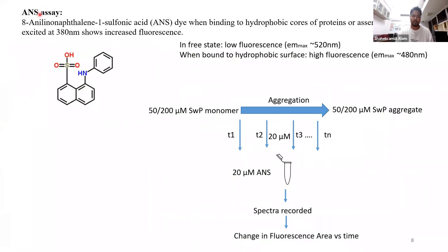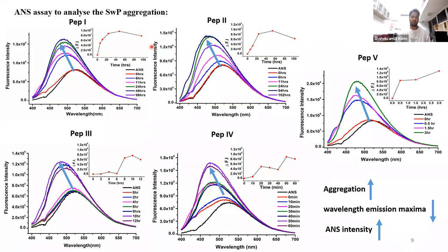We also did the ANS assay. ANS is a fluorescent probe which in free state gives no appreciable fluorescence with emission maximum around 520 nm. But when bound to hydrophobic surfaces — when monomers come closer — it gives higher fluorescence and the emission is blue-shifted. As aggregation proceeded, we observed a blue shift with an increase in fluorescence in the ANS assay, consistent for all peptides, suggesting the aggregation is occurring and species are coming closer.